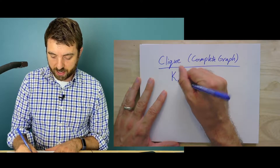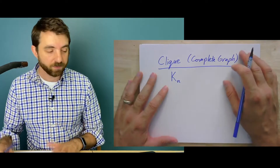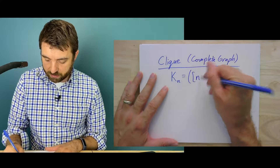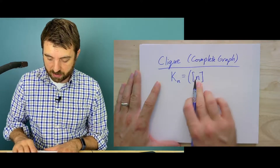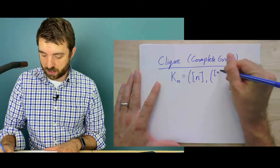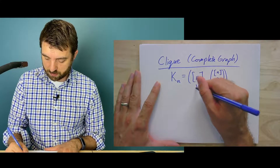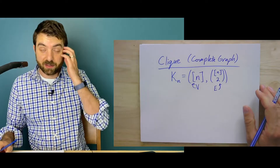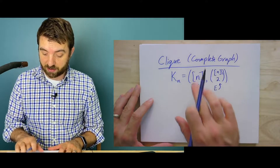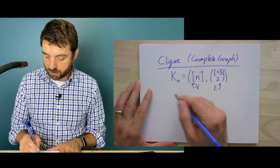We'll usually call it K_n, where n is the number of vertices. N is pretty much always going to be the number of vertices; if I want to refer to the number of edges I'll use m. The vertex set is the numbers from 0 to n minus 1, and the edges are all pairs — that's n choose 2. This is clearly a graph since the edge set is a subset of the vertex set choose 2.